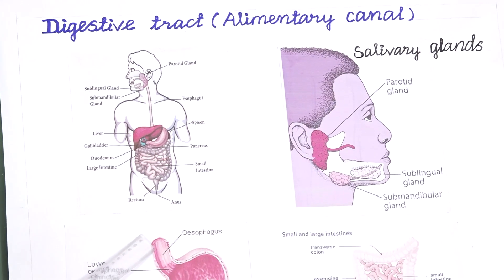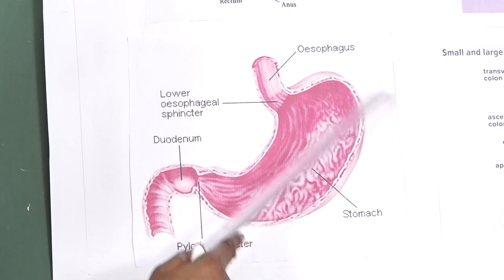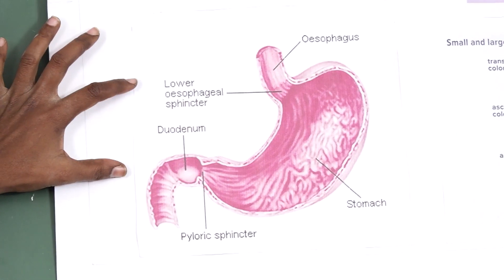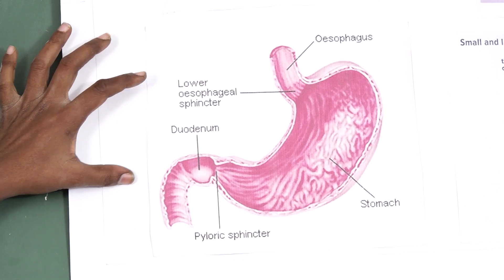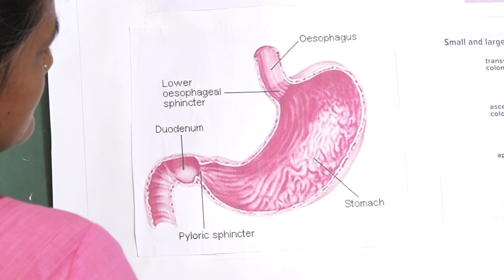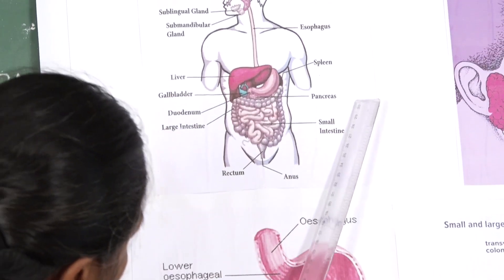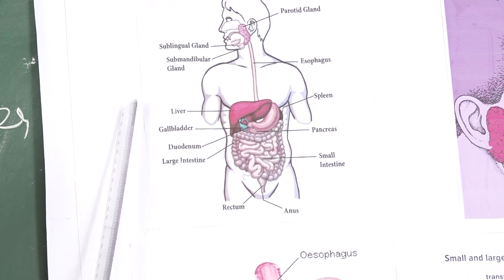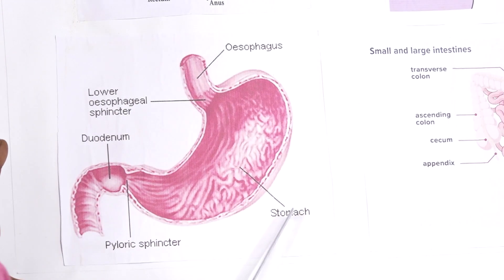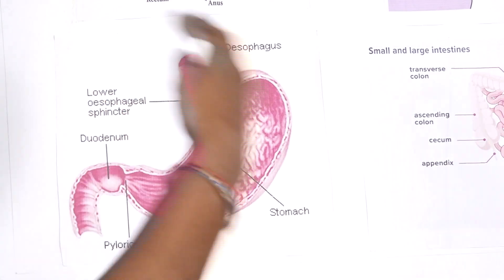The stomach is a thick, J-shaped organ made of muscles. Here, food is mixed with enzymes such as pepsin, rennin, gastric lipase. The pancreas produces pancreatic juice and the liver produces bile juice. These enzymes mix with the food and digestion takes place, turning the food into liquid.